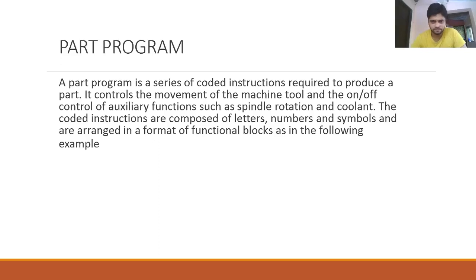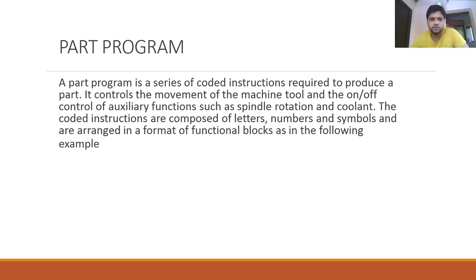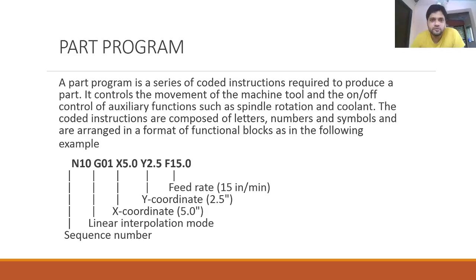A part program is a series of coded instructions required to produce a part. We supply a coded instruction set to a CNC (computer numerical control) machine, perform all the required settings, and then the CNC machine executes these instructions line by line to perform the required machining operation on the workpiece. It controls the movement of the machine tool and the on/off control of auxiliary functions such as spindle rotation and coolant.